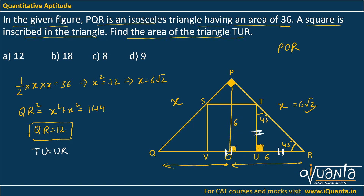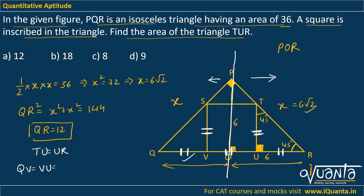By the symmetry of the isosceles triangle, QV = SV, which means QV = VU = UR. Setting all three equal to Y, we get QV + VU + UR = 3Y = QR = 12, so Y = 4.